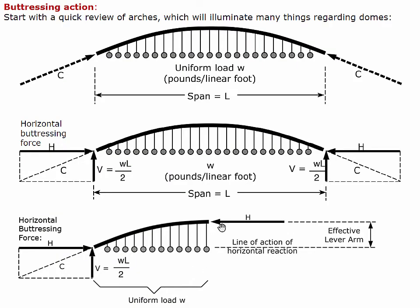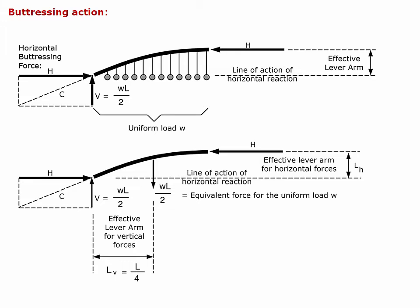So the force exerted at the cut interface has to be a horizontal force — it can't be a vertical force. We have a vertical force of WL over 2 upward at the support, and a downward force of WL over 2 from the distributed load over the half-span we chose. When we take the sum of all vertical forces, they equal zero, so there can't be any vertical force at the cut. This horizontal force has to be horizontal, and furthermore it has to be equal and opposite to the buttressing force at the support, because they are the only horizontal forces on this free body.